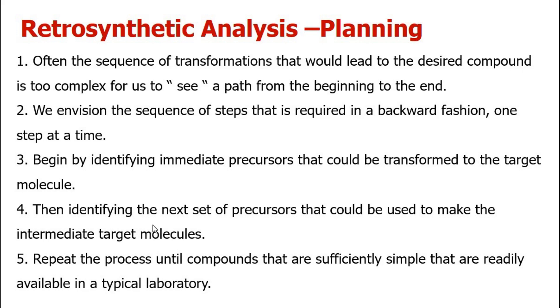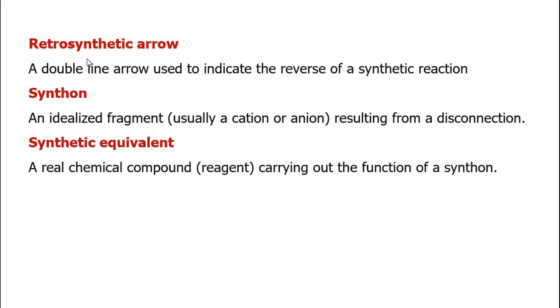The retrosynthetic arrow is a double-lined arrow used to indicate the reverse of a synthetic reaction. The synthon is a simple molecule — usually a cation or anion — that is obtained after disconnection. When a synthon is available in the reagent list, it is known as the reagent and carries out the function of the synthon.